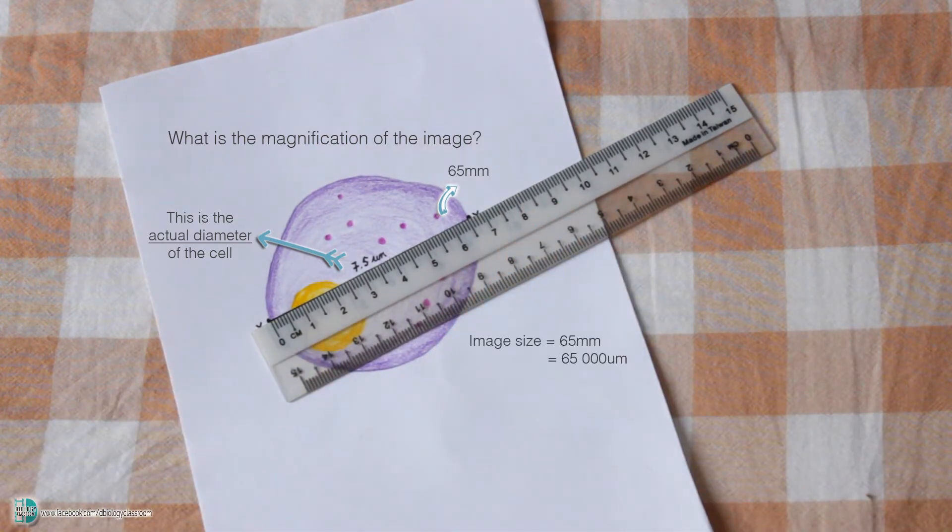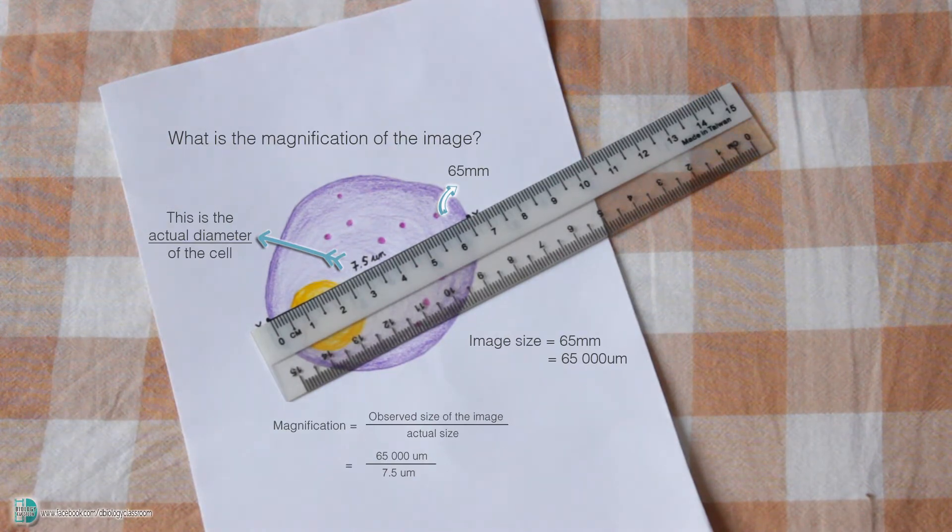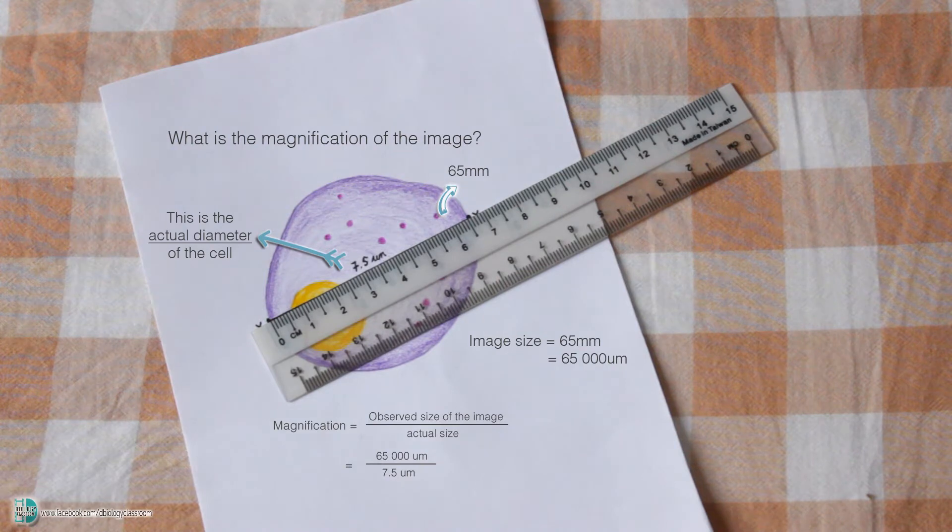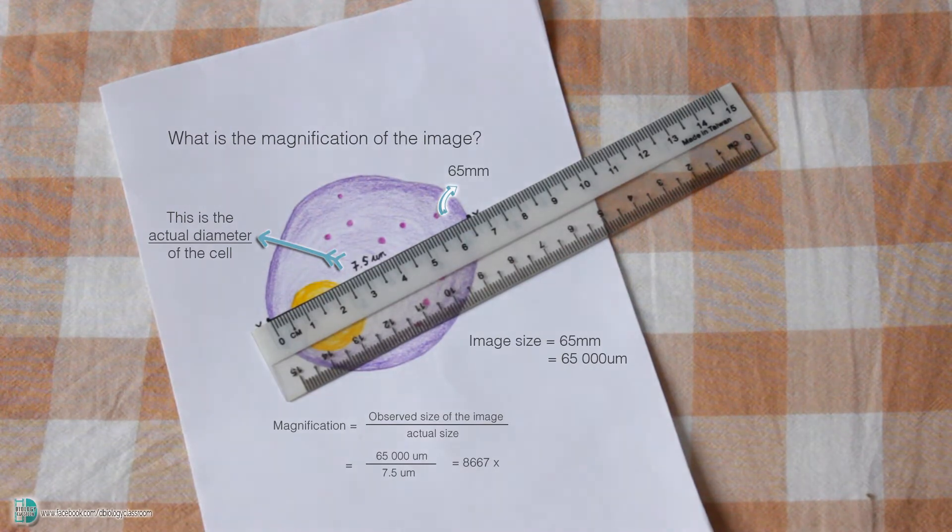Convert it into micrometer. Then, divide it with 7.5 micrometer. You will find out that the magnification of the image is about 8,667 times. Bear in mind that in the calculation, the unit you use for the image size and the actual size has to be the same. That is why I have converted the unit from millimeter to micrometer.